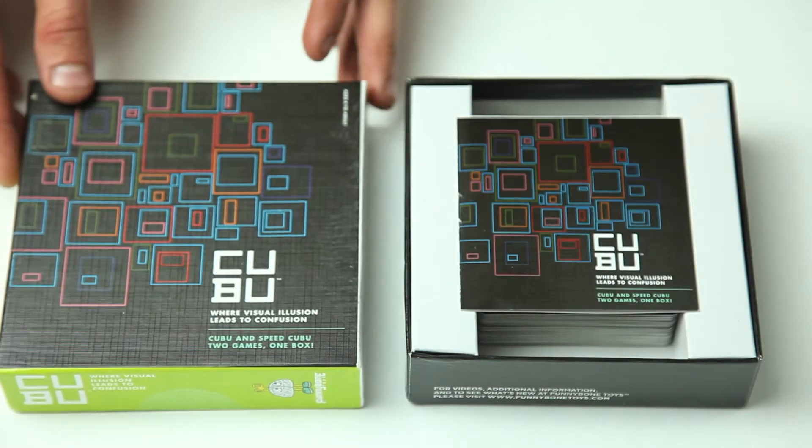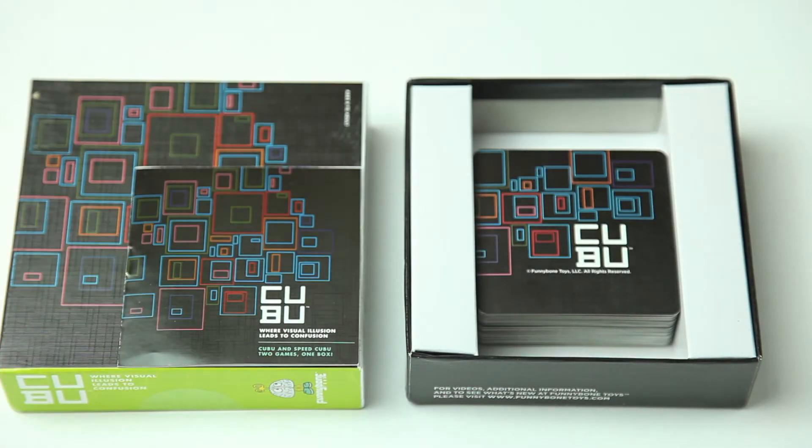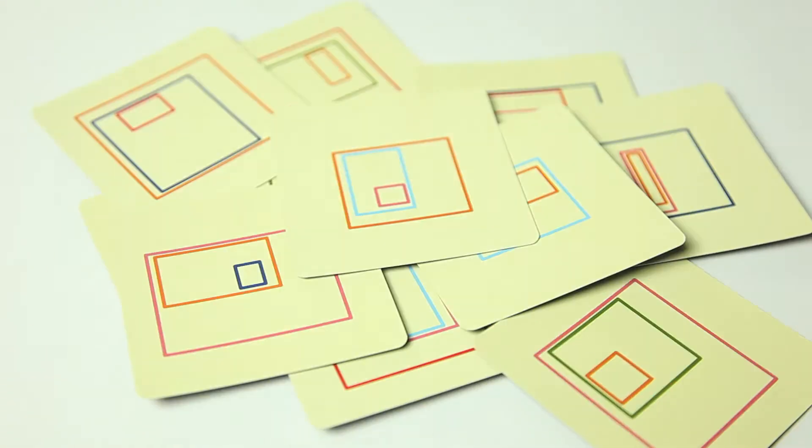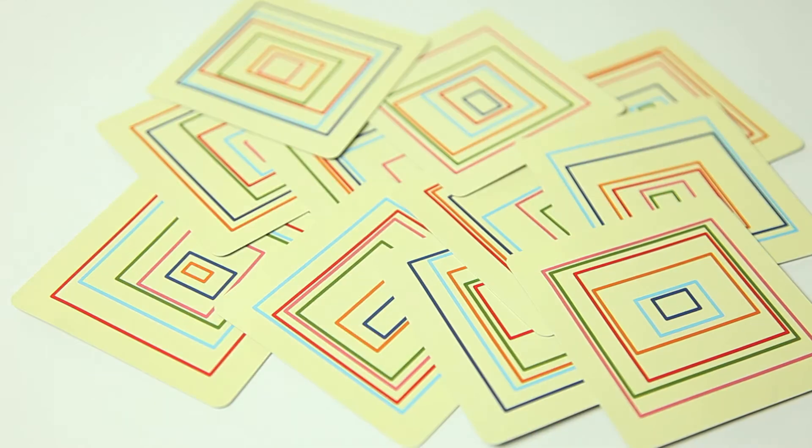Here's what comes in the box. You have 60 unique Kubu cards. Each card will have either two, three, four, five, or six boxes. No card is alike in the entire deck.